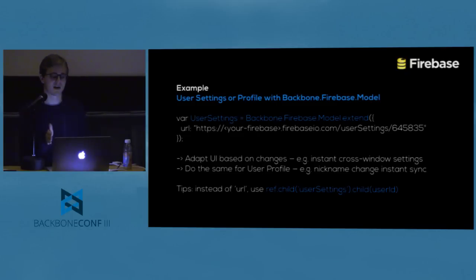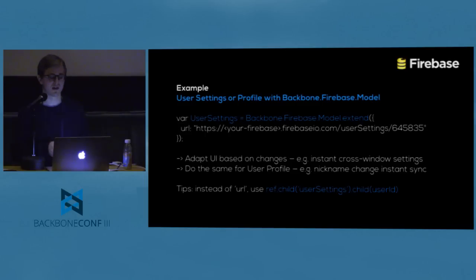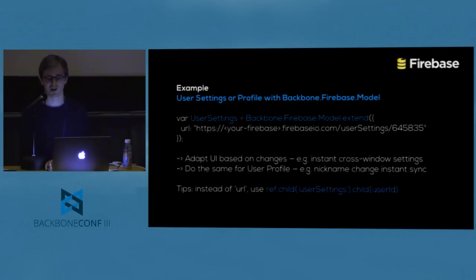You don't have to write the URL all the time. You can just use the Firebase reference and pass it directly to your model. You can use the child method to access different children, or you can use the slash directly — like ref child user-settings slash user-ID. You don't have to chain child after child.